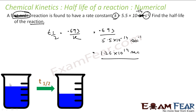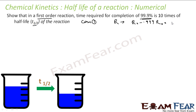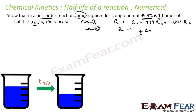Next problem: show that for a first-order reaction, the time required to complete 99.9% of the reaction is 10 times T½. Case 1: reaction is 99.9% complete, so R = 0.001 R₀. Case 2: R = R₀/2, which gives T½. We need to show the ratio of times is 10.